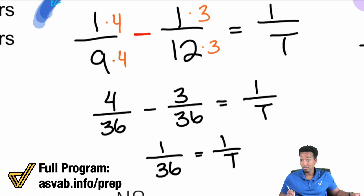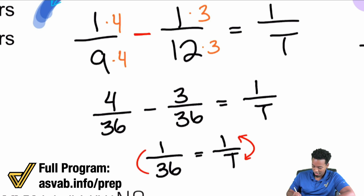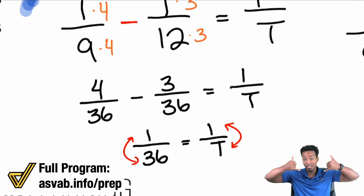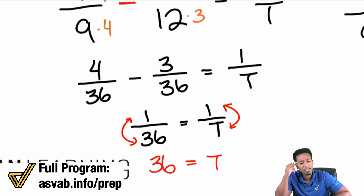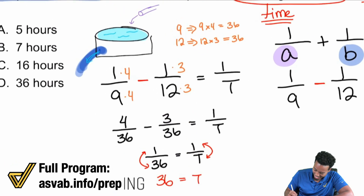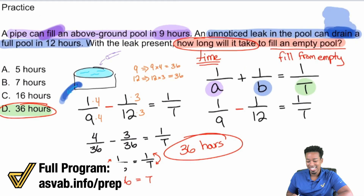We have 1/36 = 1/T. We can solve this by flipping both sides or cross-multiplying — either way it works. If you flip them around, you get 36 = T, which is 36 hours. The pipe fills in 9 hours and the leak drains in 12 hours, so our answer is in hours. Our answer is 36 hours. That's why D is the correct answer.